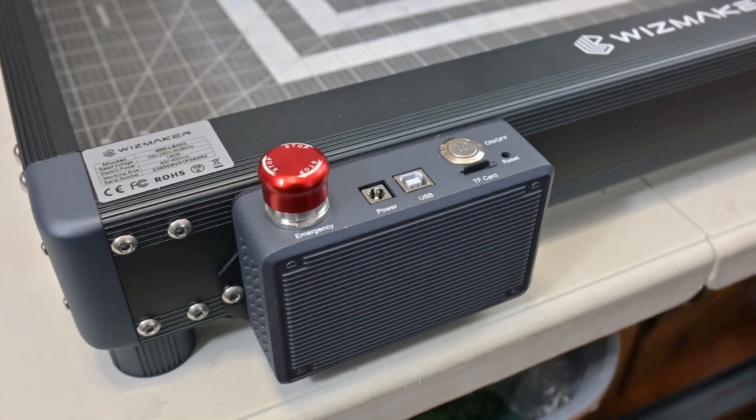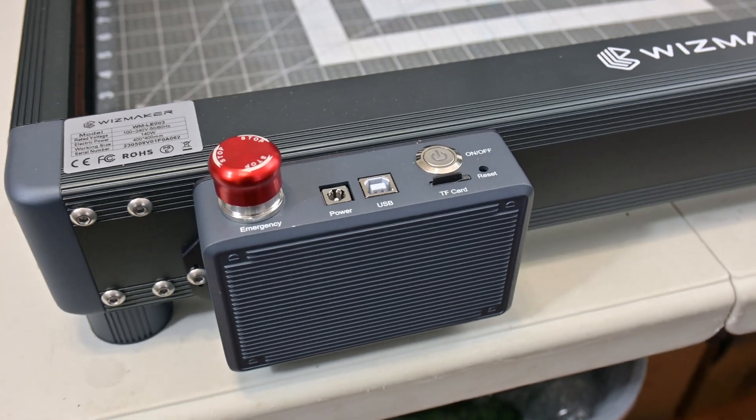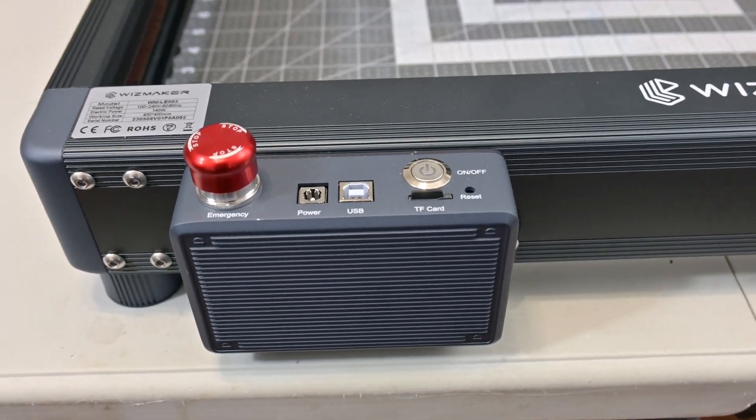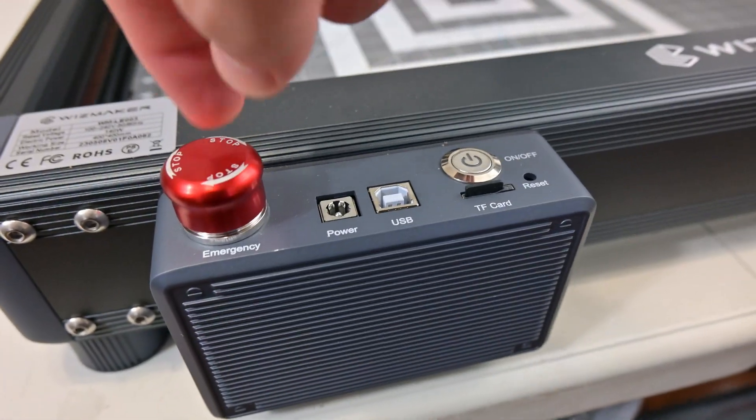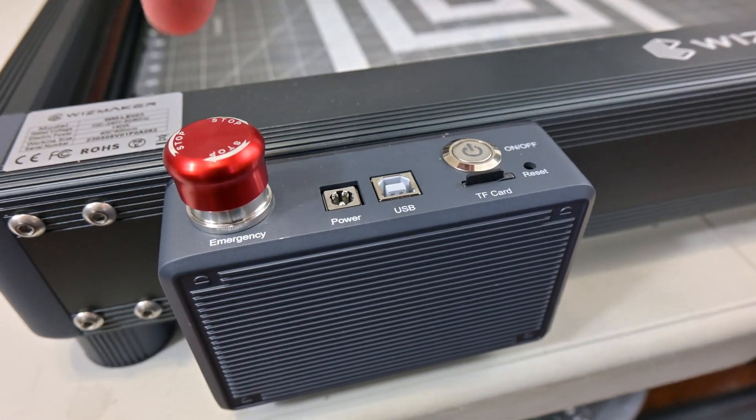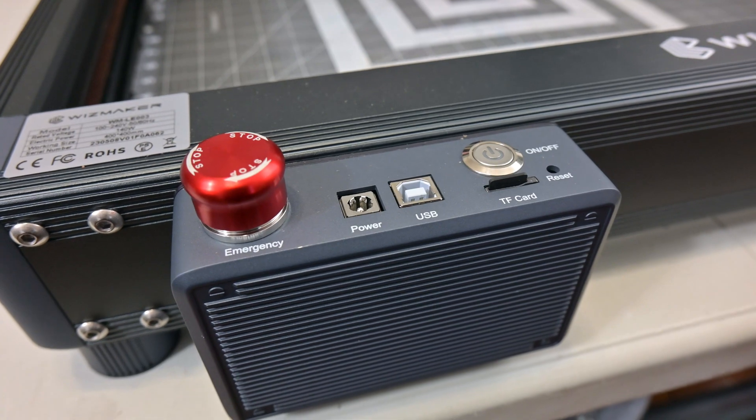At the front of the machine is the control box. It has power inputs, USB input, a micro SD card slot, power switch, and an emergency stop latch. It's always good to see an emergency stop latch that immediately cuts all power to the machine when touched.